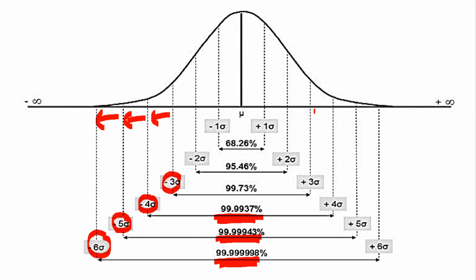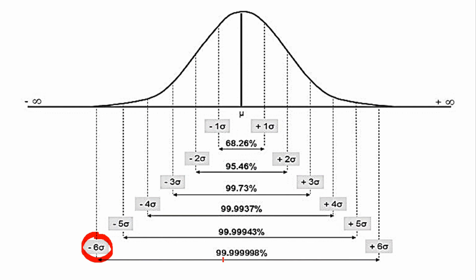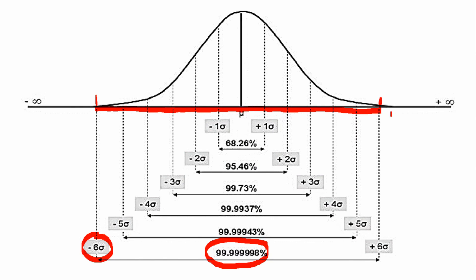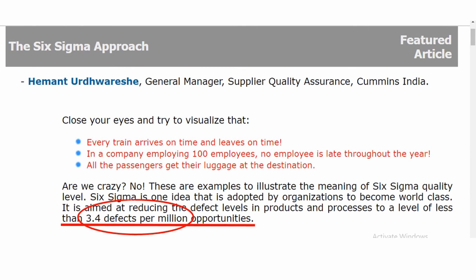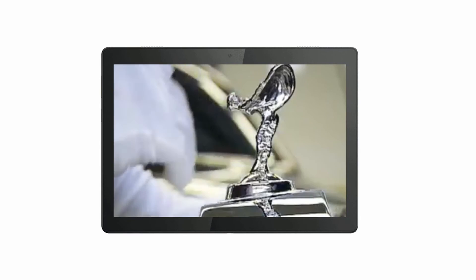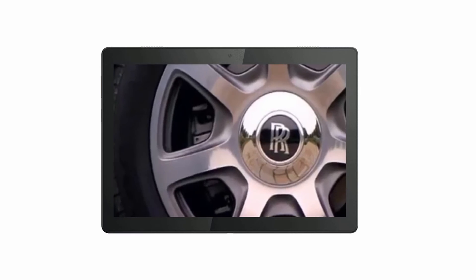According to 6 sigma statistics, a 6 sigma process is one in which 99.99999938% of all opportunities are statistically expected to be free of defects. In other words, only 0.0000002% of the results can be outside of the expected average result. That is equivalent to 3.4 defects per million. The very essence of 6 sigma quality means errors rarely occur. 6 sigma aims to increase quality using statistical process control.